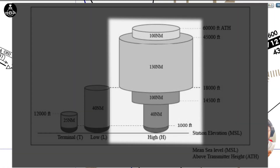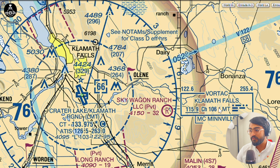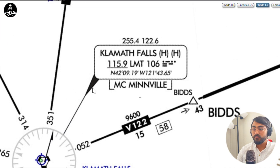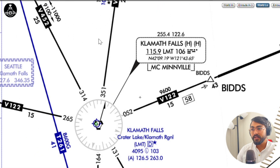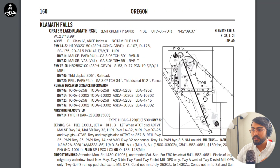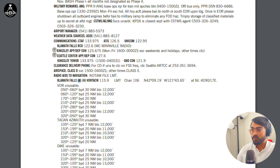If you're using a VFR sectional and this information is not present, you go to the low enroute chart, where you can easily read it. If you are a VFR pilot and want to know the VOR service volume, the second way is to check the chart supplement for airports around this VORTAC. Looking into the Klamath Falls chart supplement page, under the radio navigation section, you'll find Klamath Falls with an H written next to it — that is how you know the service volume.